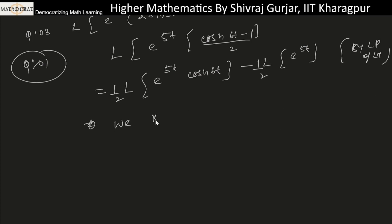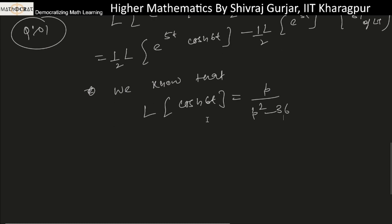We know that Laplace of cosh at is p divided by p squared minus a squared, which here is 36. Then by the shifting theorem, Laplace of e to the power 5t times cosh 6t...